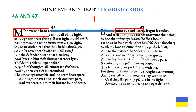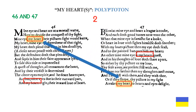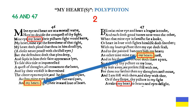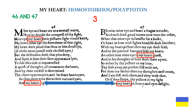Sonnets 46 and 47 are definitely connected through mine eye and heart — the phrase appears in line one in both poems, another example of homo stoikos. My heart, or hearts in brackets, is another example of polyptoton. My heart in sonnet 46 is on line 14, and my heart in sonnet 47 is also on line 14.